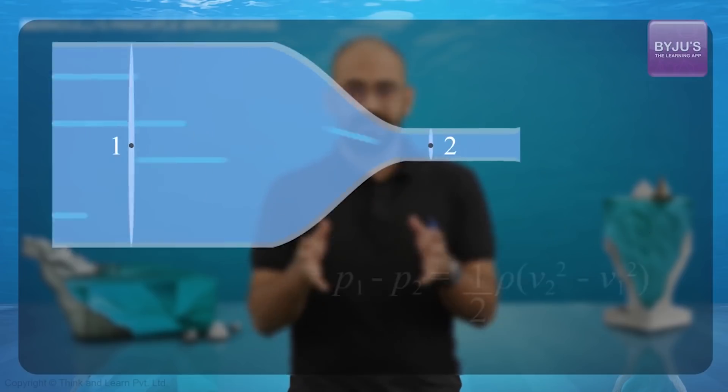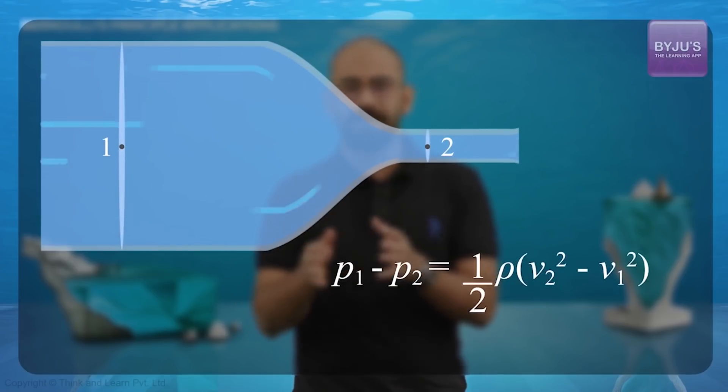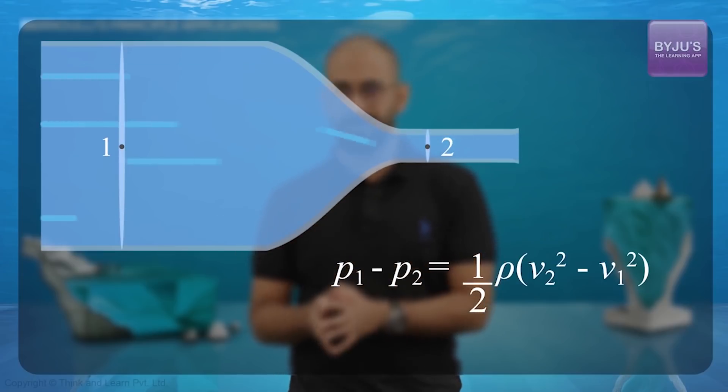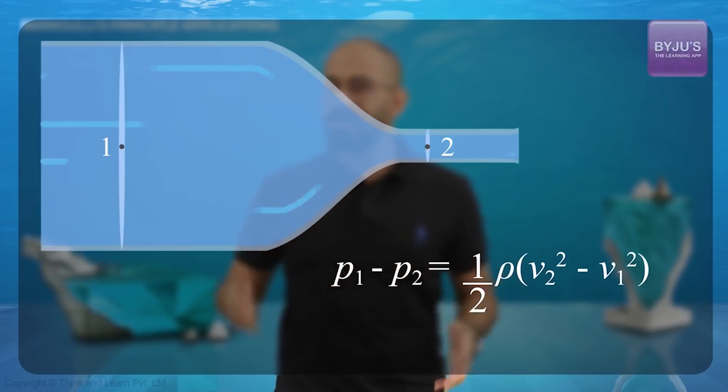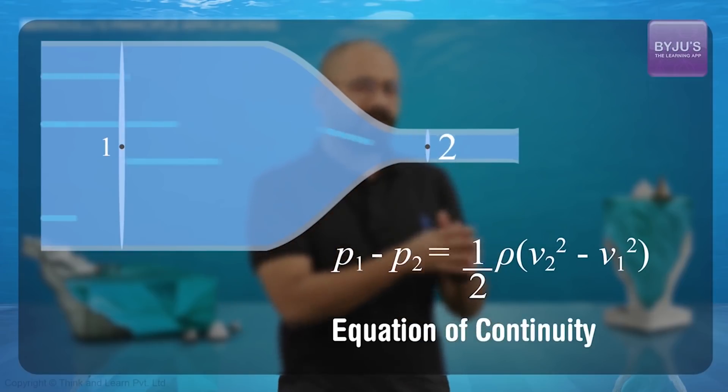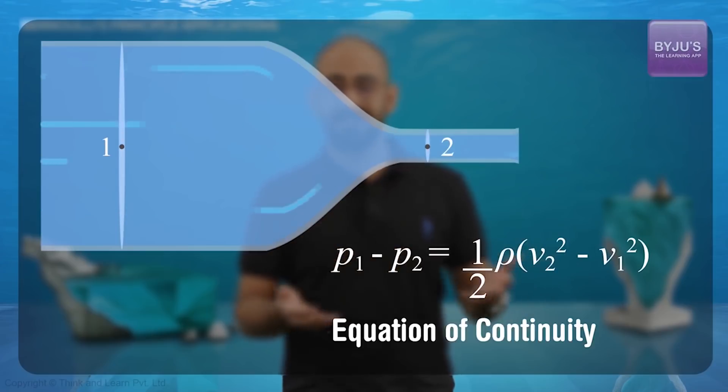Now again, if I rearrange this, I get P1 minus P2 equals half rho v2 squared minus v1 squared. Now, we already know from the equation of continuity that the speed over here will be greater because the area is lesser.